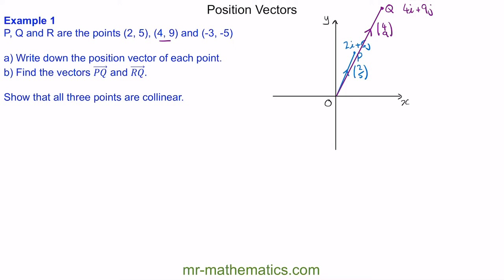For point R, we're going minus 3 in the x direction and minus 5 in the y direction, so it'll be about here. We're going from the origin to R, so we can label the direction. In terms of i and j, that'd be minus 3i minus 5j, or in column vector form, (-3, -5). So these are the position vectors for each point.